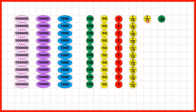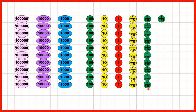If we have one one-tenth counter, we can exchange that for 10 hundredths counters, because 10 hundredths has the same value as one tenth. And again, instead of writing one over a hundred, I could have written 0.01 on these counters.